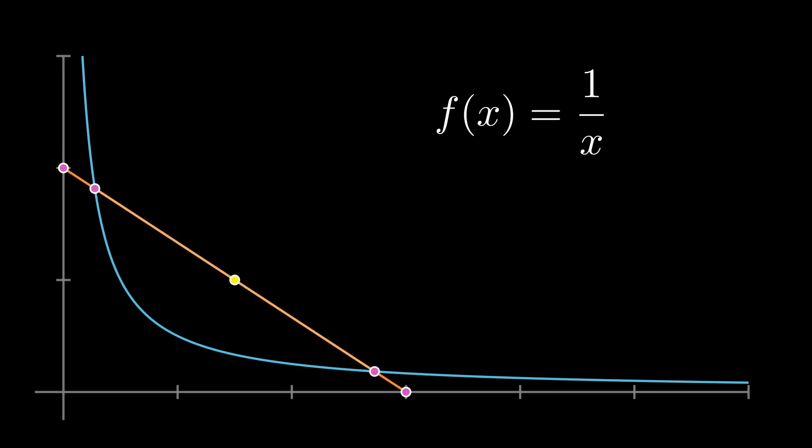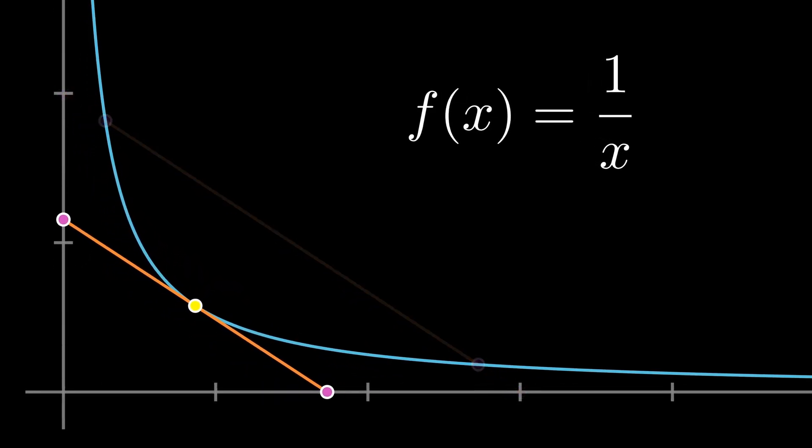In the limiting case of the tangent line, the chord on the hyperbola collapses to the tangency point which then becomes the midpoint of the segment between the asymptotes.